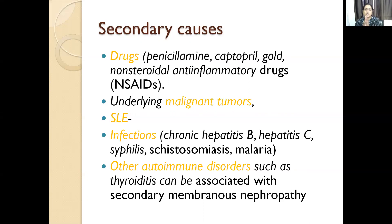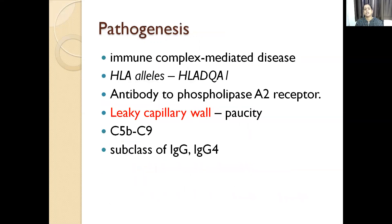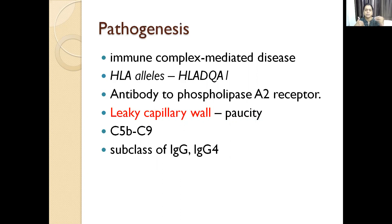Membranous nephropathy is usually seen in 40 to 70 year old people, either primary or secondary. Coming to the pathogenesis: this is an immune complex mediated disease associated with HLA, usually HLA-DQA. The antigen — as I told you when discussing Heymann nephritis — in rats is megalin, but in humans it is the phospholipase A2 receptor which acts as the antigen to which the antibody comes and binds.